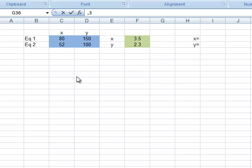If we remember our two equations were 80x plus 150y is equal to 3.5 and 52x plus 100y is equal to 2.3 and we want to solve for x and y.